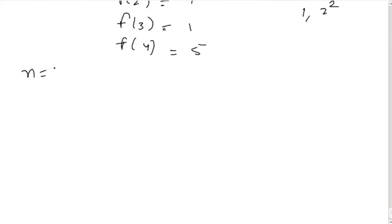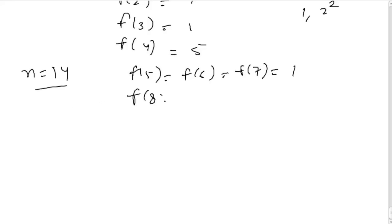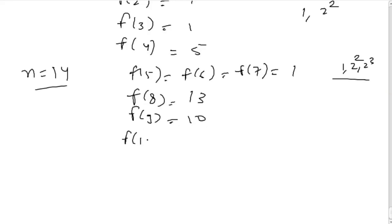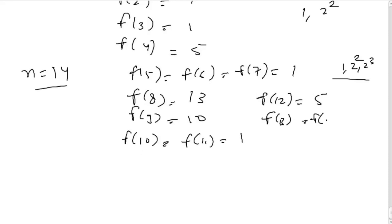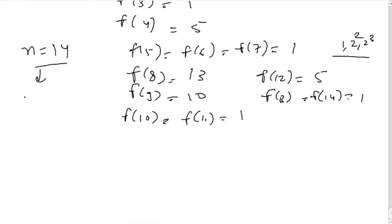For n = 14: f(5) = f(6) = f(7) = 1. f(8) = 1 + 4 + 8 = 13 because 1, 2 squared, and 2 cubed all divide 8. f(9) = 1 + 9 = 10 because 1 and 3 squared divide 9. f(10) = f(11) = 1. f(12) = 5 because 1 and 2 squared divide 12. f(13) = f(14) = 1. Summing all of them gives 43, so for n = 14 the algorithm should return 43.